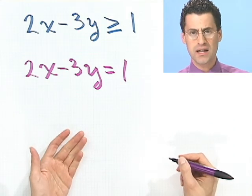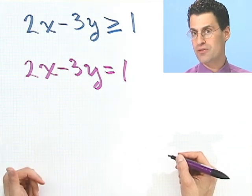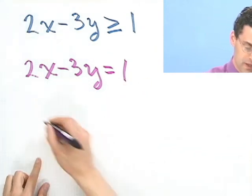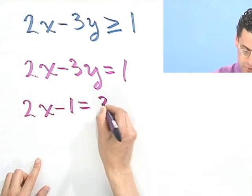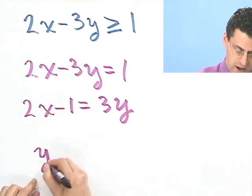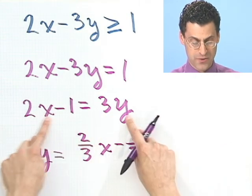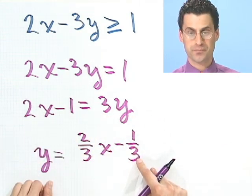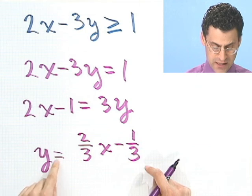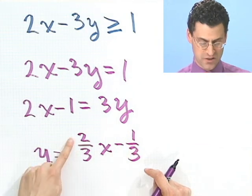Now, what's the graph of that? Well, that's some sort of line. And if you want to see exactly what that is, I could write this in slope-intercept form. If I solve for y, I would bring this minus 3y to this side and bring the 1 over here. I would see 2x minus 1 equals 3y. And if I divide both sides by 3, y equals 2 thirds x minus 1 third. So the y-intercept is minus 1 third, and the slope is 2 thirds.